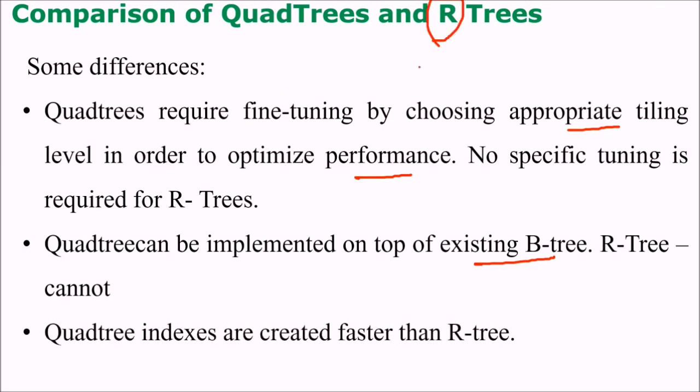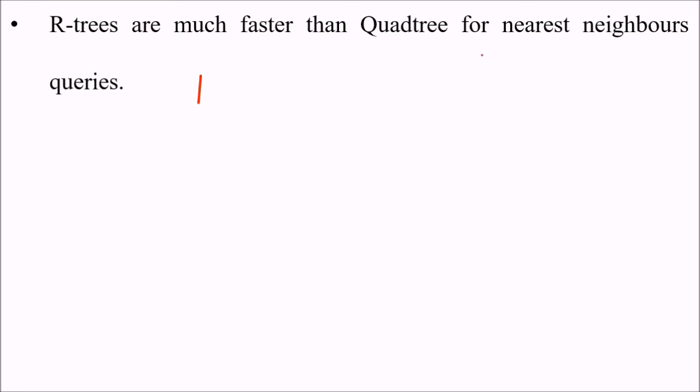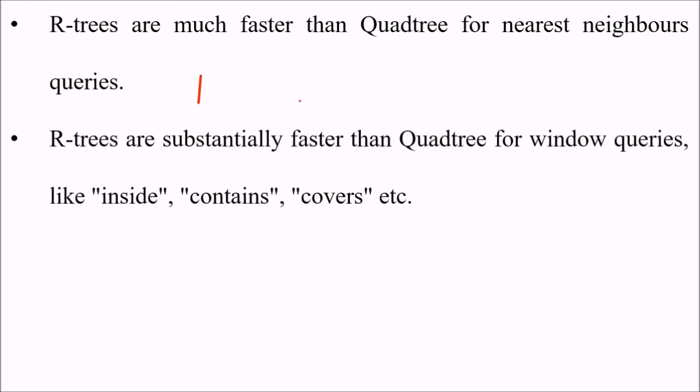R-tree is a region tree. Quadtree indexes are created faster than R-trees. R-trees are much faster than quadtrees for nearest neighbor queries, and R-trees are substantially faster than quadtrees for window queries like inside, contains, covers, etc.